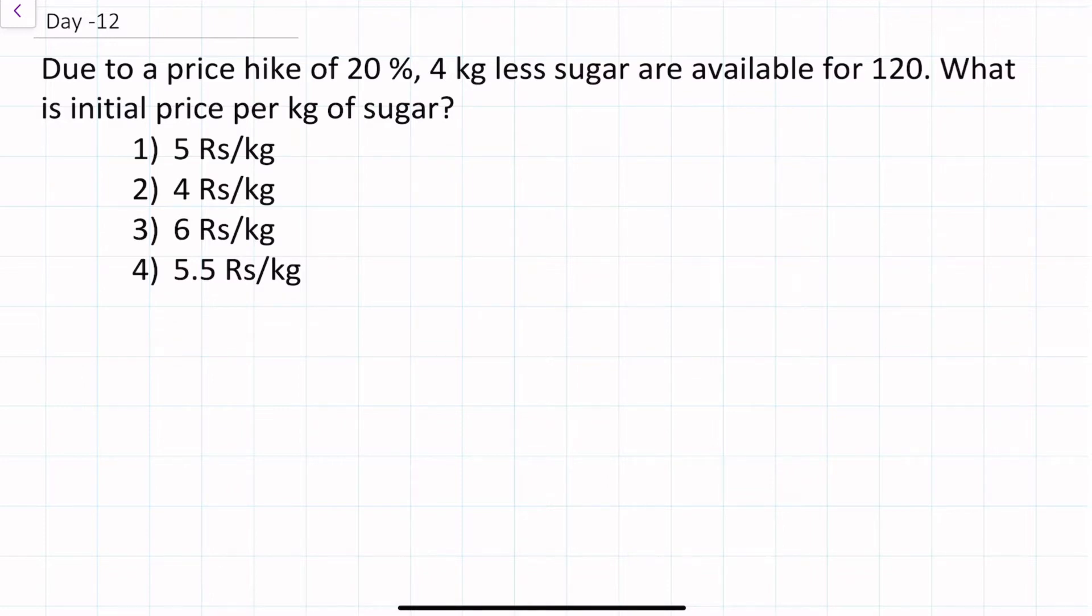Here given is that suppose there is a person that buys at x rupees per kg, y kg of sugar, and it is total 120 rupees, which means x into y which is equals to 120 rupees. Here x is the per kg value and y is the amount of sugar.